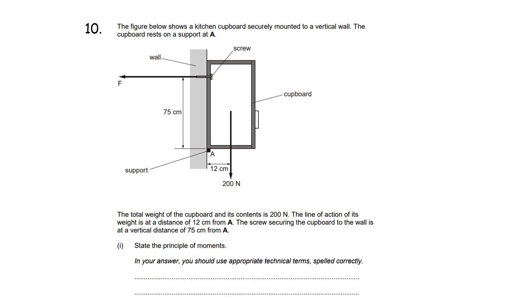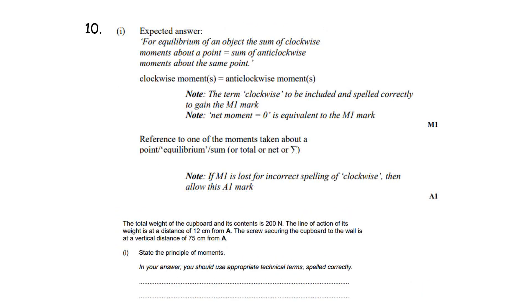So on to the next question which is a kitchen cupboard. We're given a diagram there showing a kitchen cupboard securely mounted to a vertical wall. The cupboard rests on support at A, and the first part of this question is to state the principle of moments. This is usually a two mark question, and to get both of the marks here we need to say that in equilibrium, which is a mark, the sum of the clockwise moments about a point equals the sum of the anti-clockwise moments about that same point for the second mark. So quite often students will forget to include the term equilibrium there.